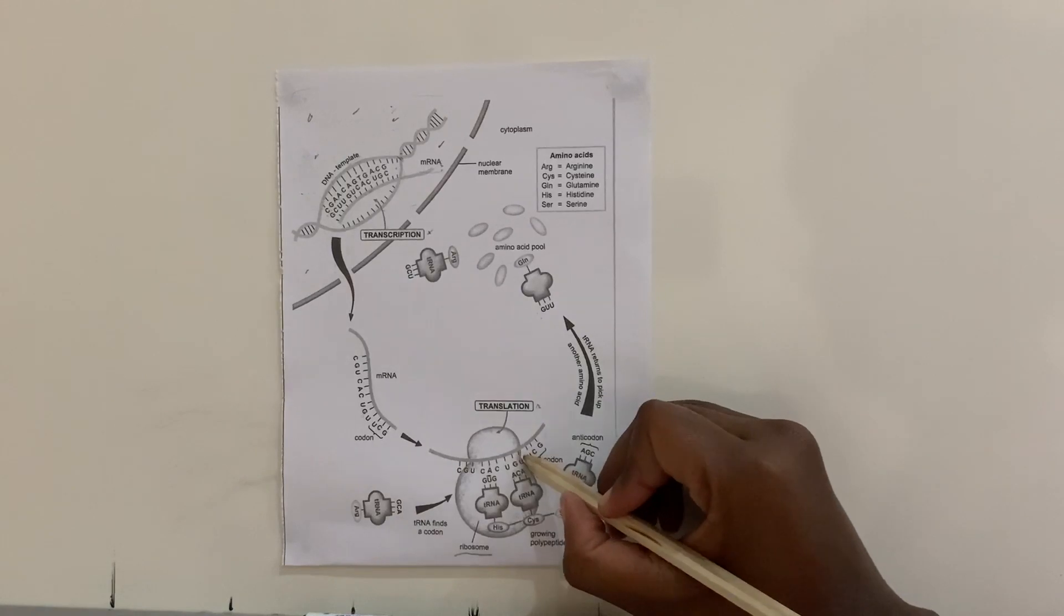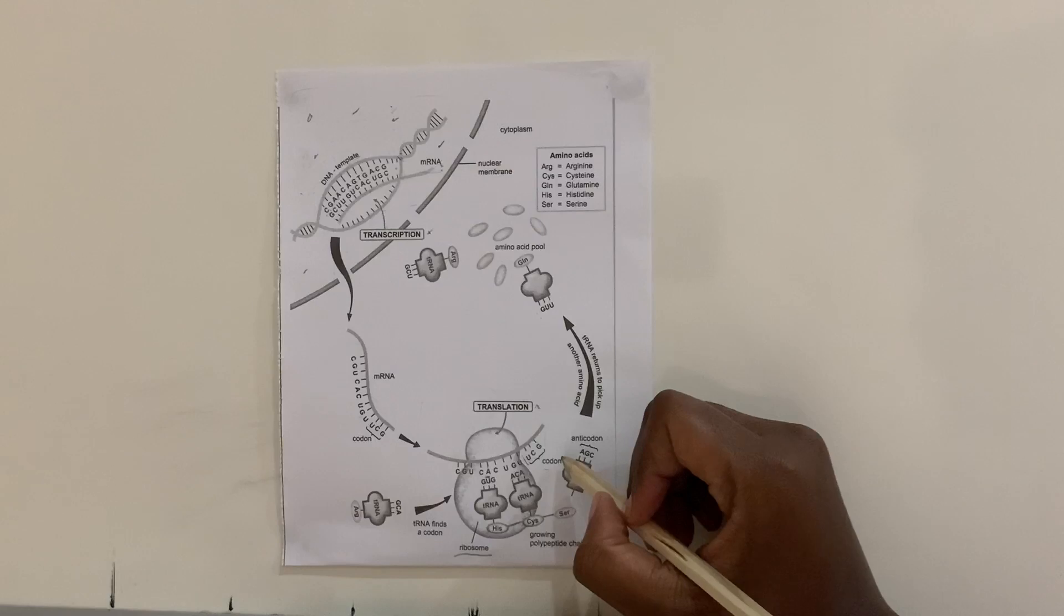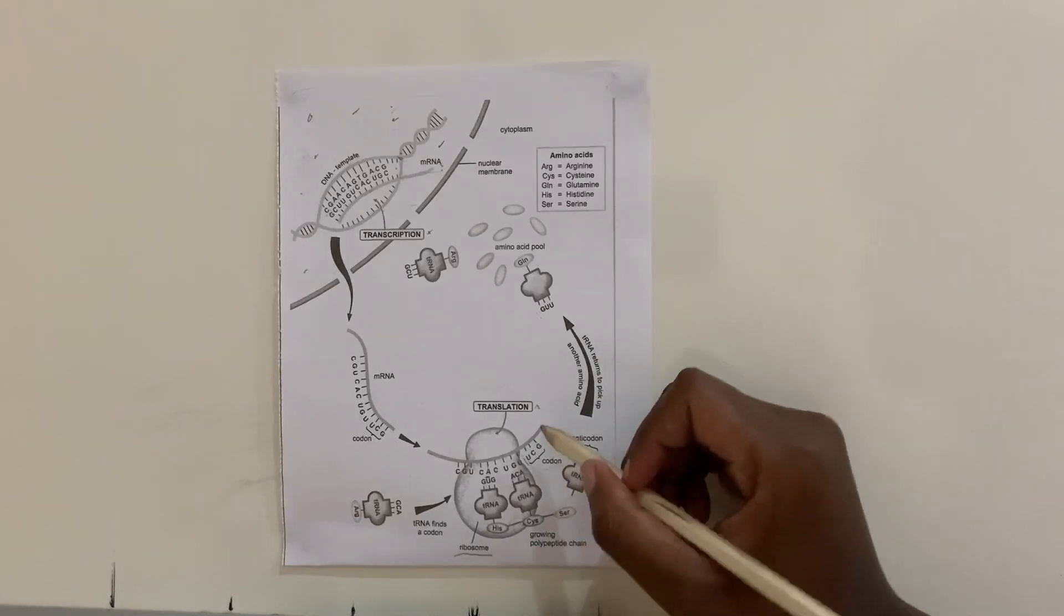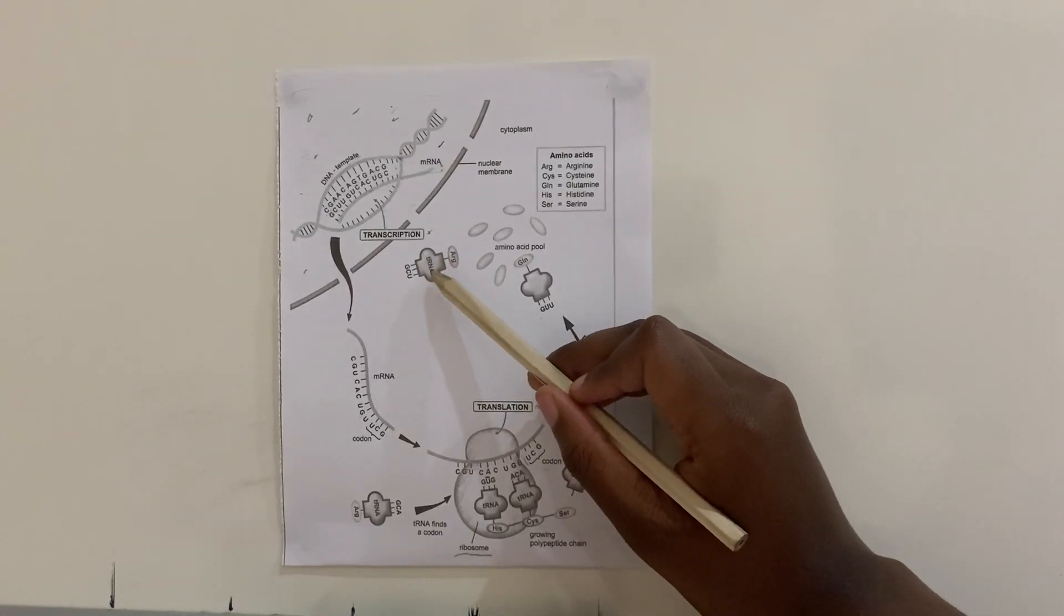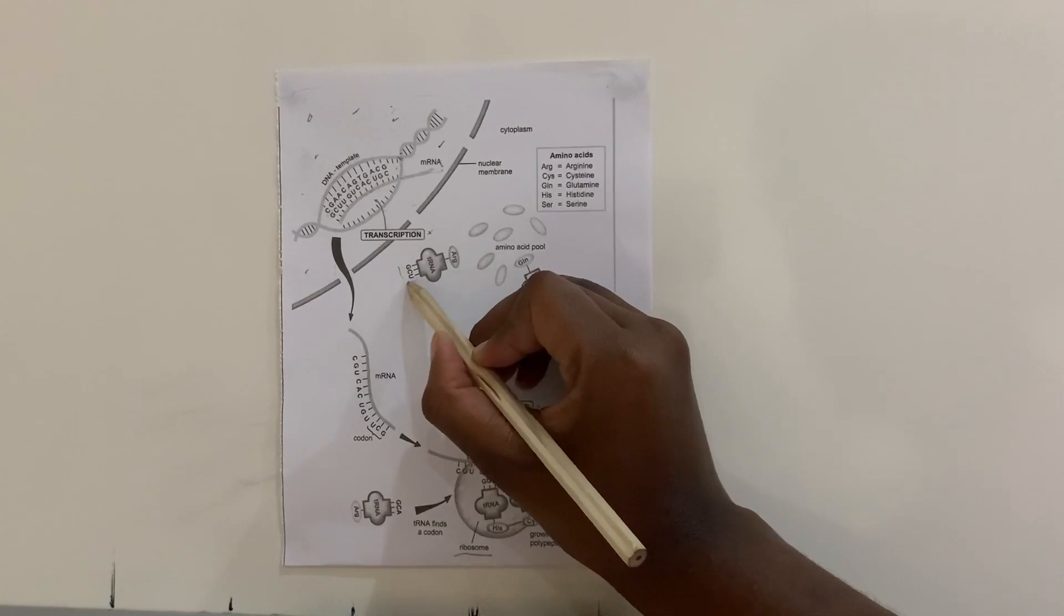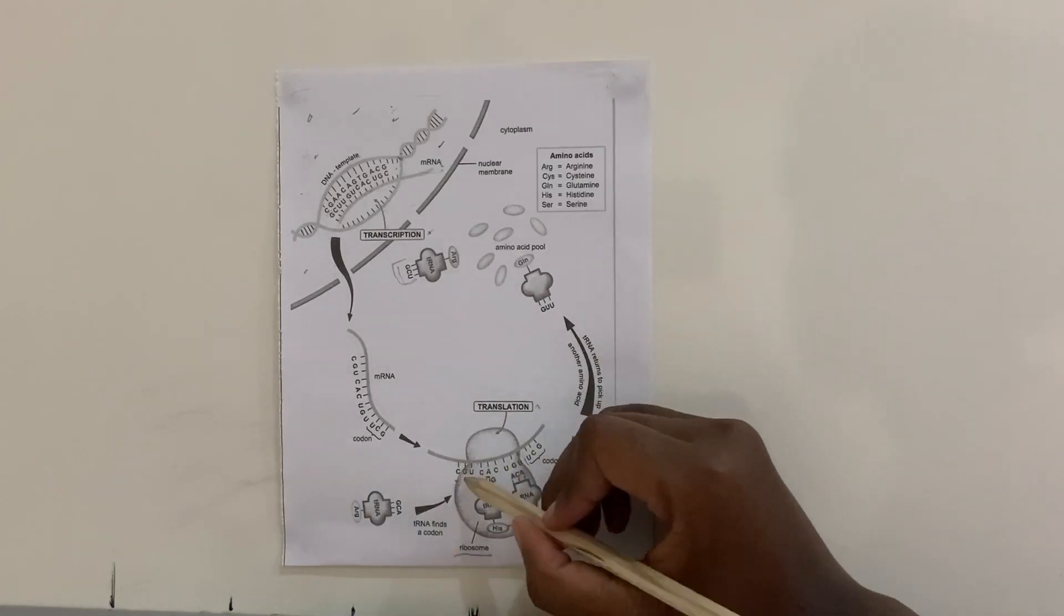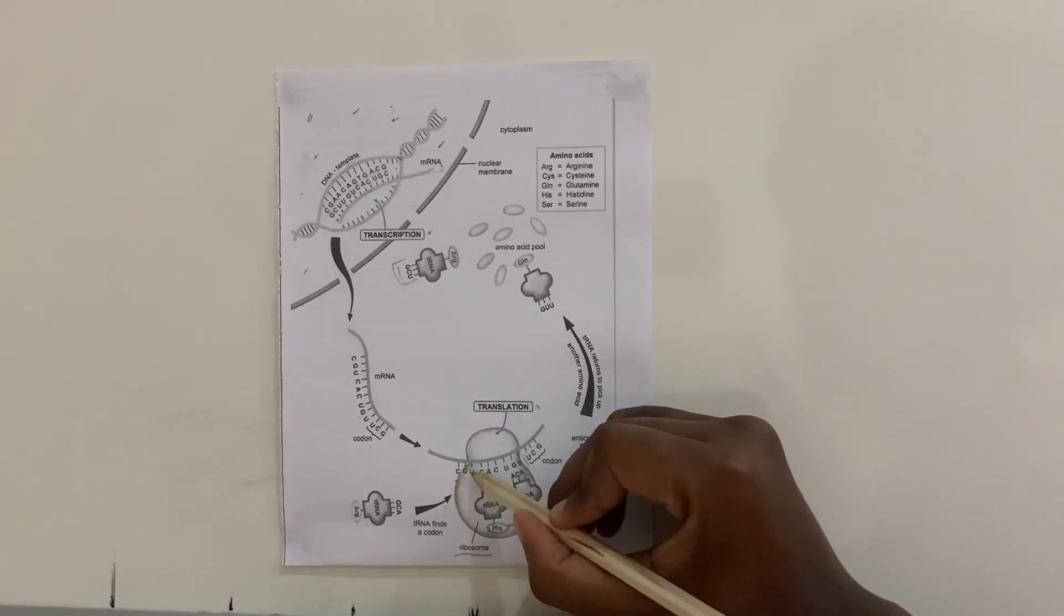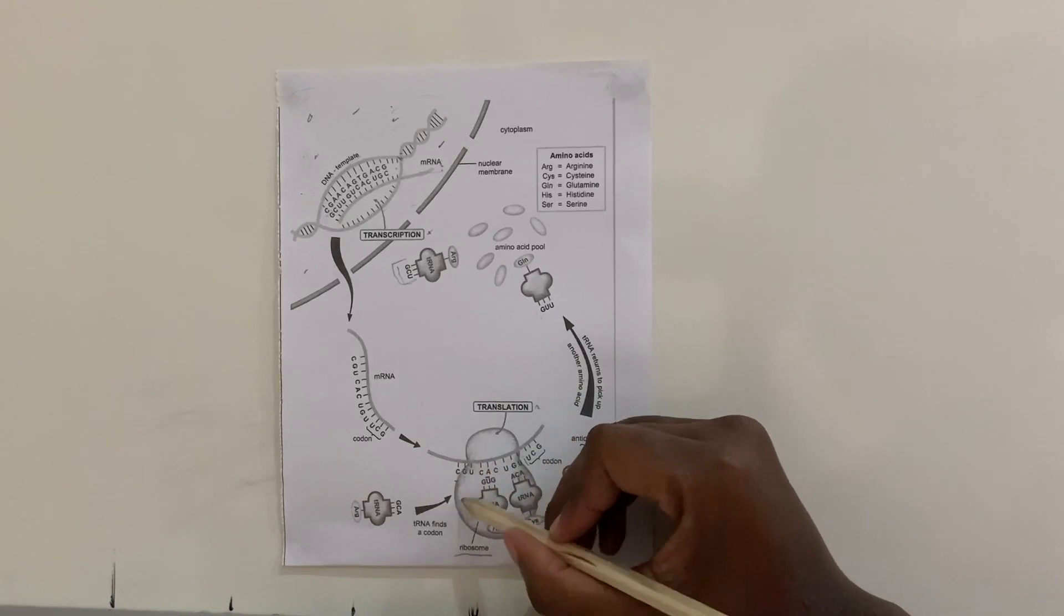Just get that in your head. So tRNA—that's transport—it brings an anticodon or amino acid according to the codon that is found on the mRNA. So here the codon that we have is CGU, so tRNA is supposed to bring the complementary one, and the complementary one will be GCA. And here, as you see, the one that's coming is GCA.